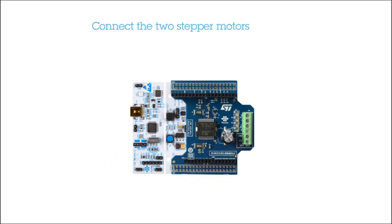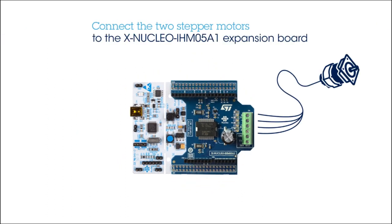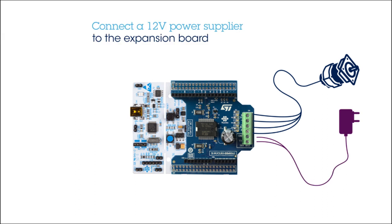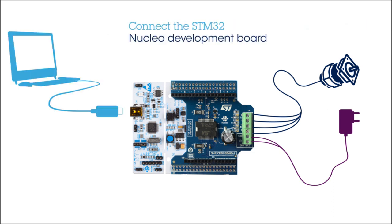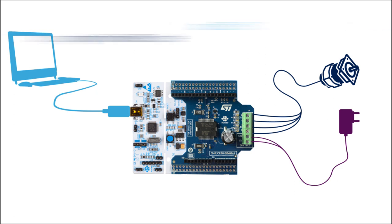Now, connect one bipolar stepper motor to the expansion board. Then connect a voltage supply — in this case, we use a 12-volt supply. Then you can connect the STM32 Nucleo board to a PC using a mini-USB cable. And then you are ready to power on!